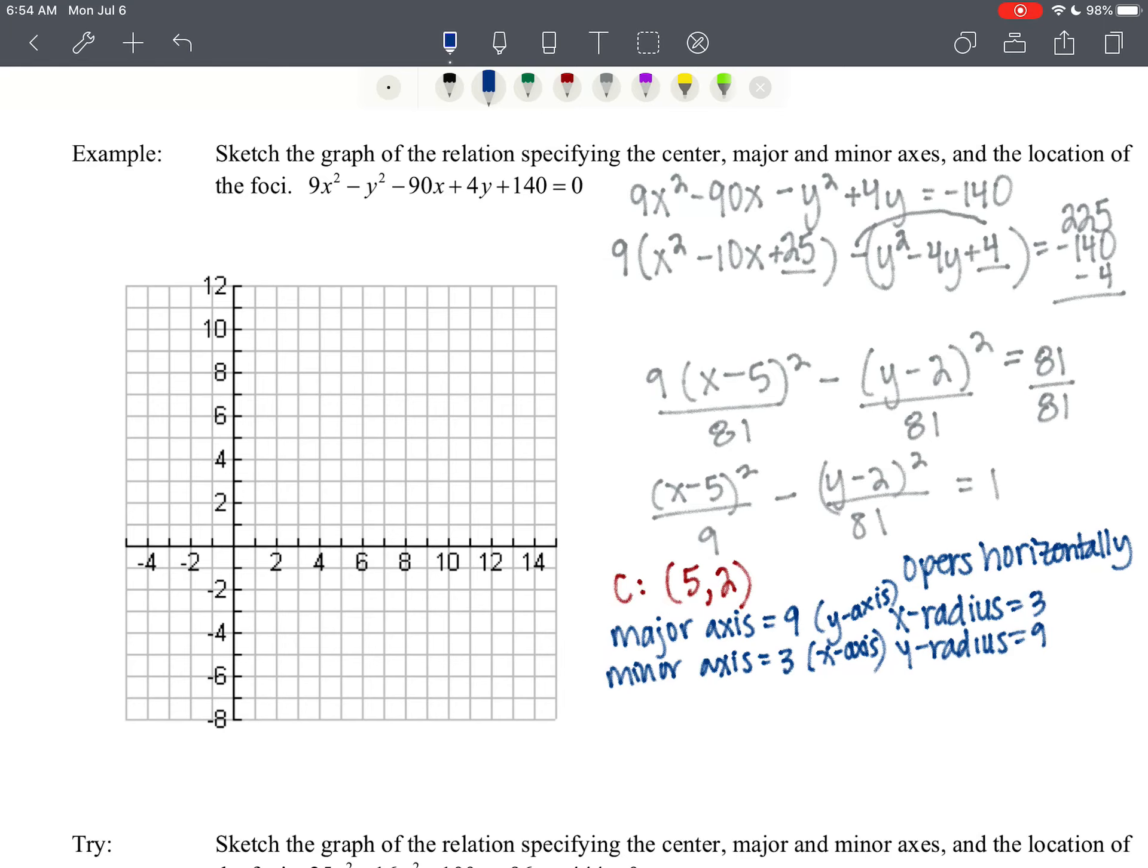So this is going to be wide because we have a major axis equaling 9. So let's see if we can do this successfully. Right 5 up to, so there's our center, and then we're going to use our axis, so we've got an x-axis of 3.